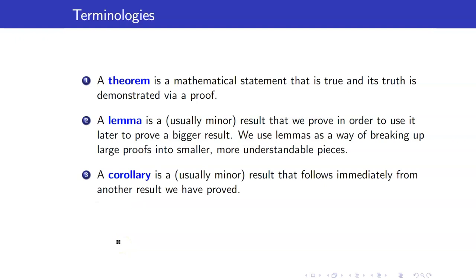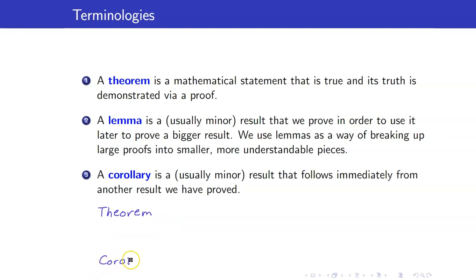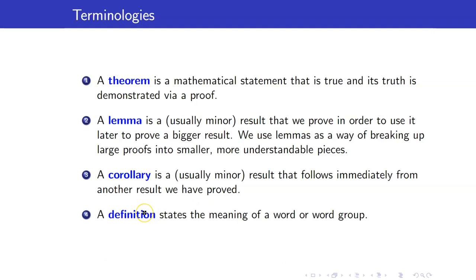What about a corollary? A corollary is usually a minor result that follows immediately from another result we have proved. For example, after a theorem and its proof, you will see a corollary. The proof of the corollary is usually just one or two sentences because the result follows immediately from the theorem.